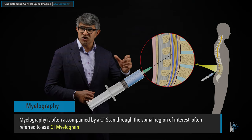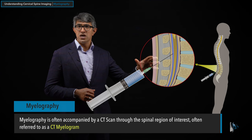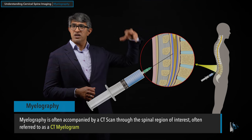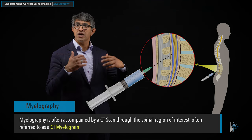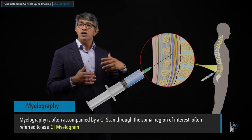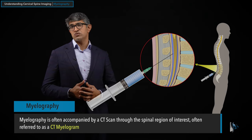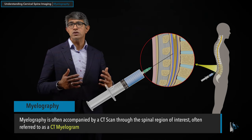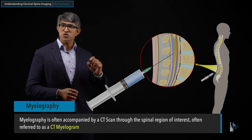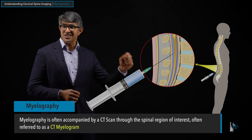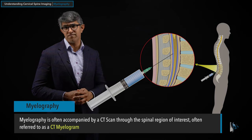They will inject some contrast material that goes into the thecal sac, and the contrast will distribute itself into the CSF and allow them to get images. It used to be that they just got x-rays, and they still will get x-rays, but frequently after getting contrast in, we will get a post-myelogram CT scan — or what some people call a CT myelogram.